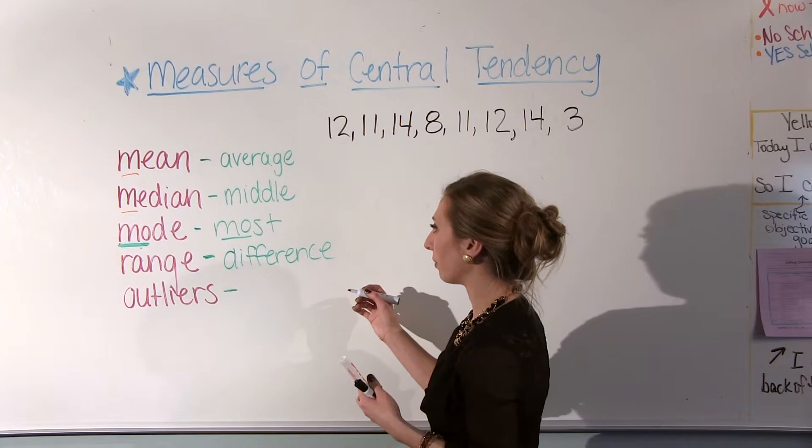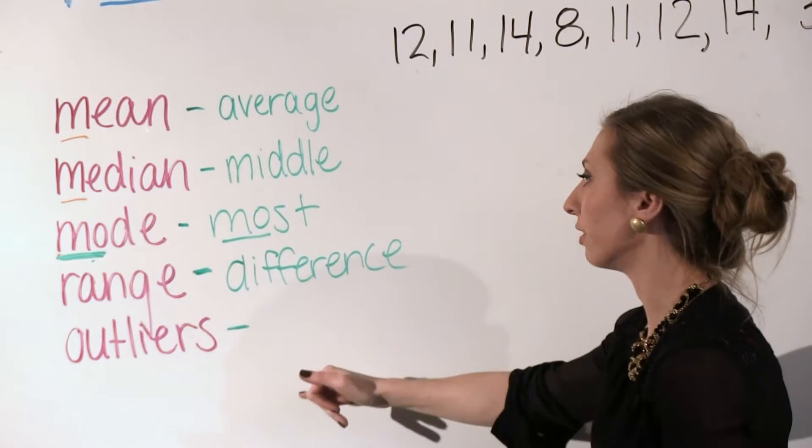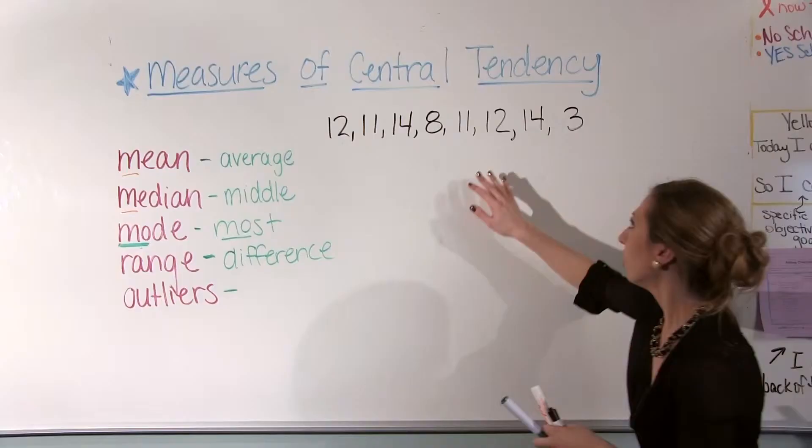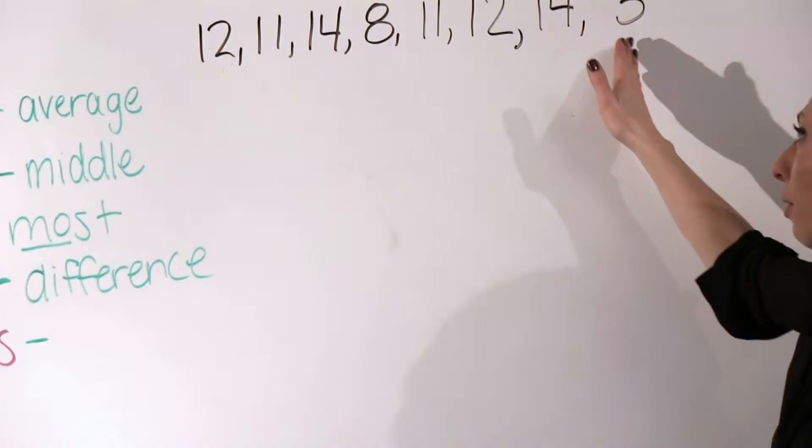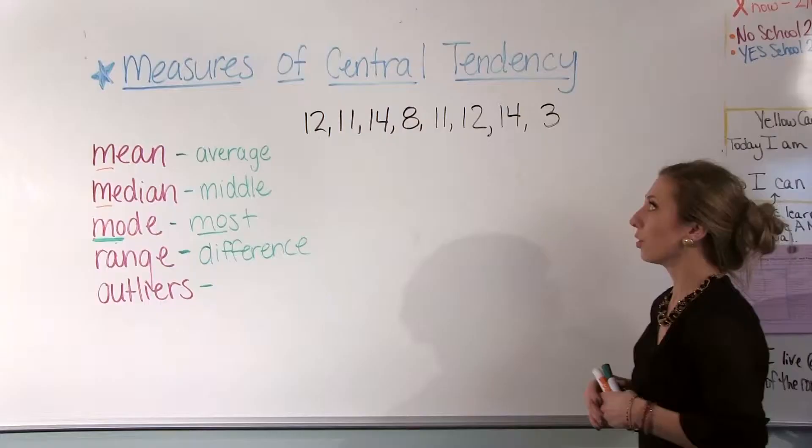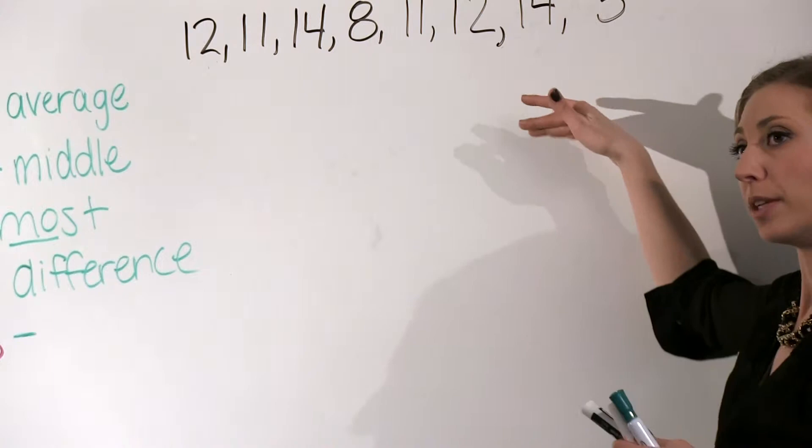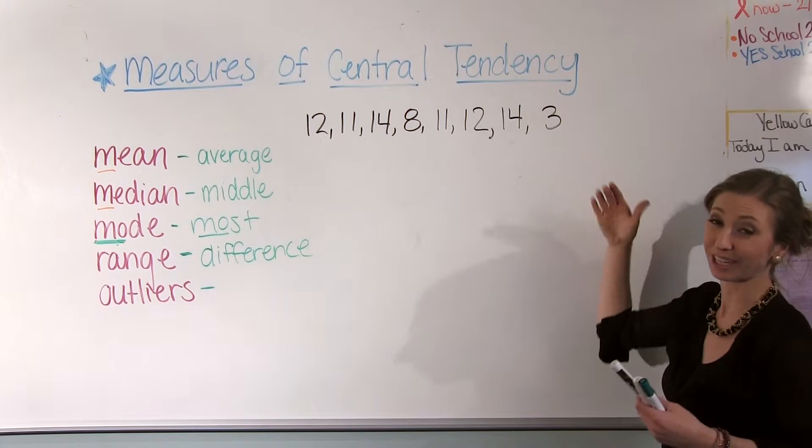I'm going to show you an example of how to calculate all of these things using this set of data. If you're doing the mean, like I said it's the average, you are adding all of these numbers up and then you divide by how many numbers there are. So when you add all of these numbers up, you're going to get 85. So just 12 plus 11 plus 14 plus 8 and so on, you get 85.